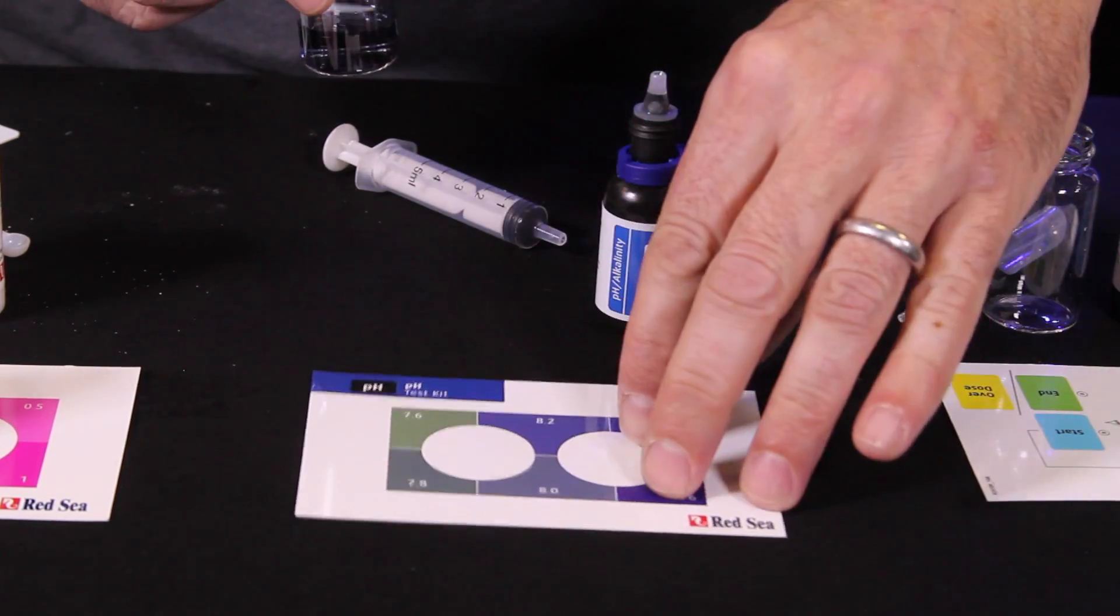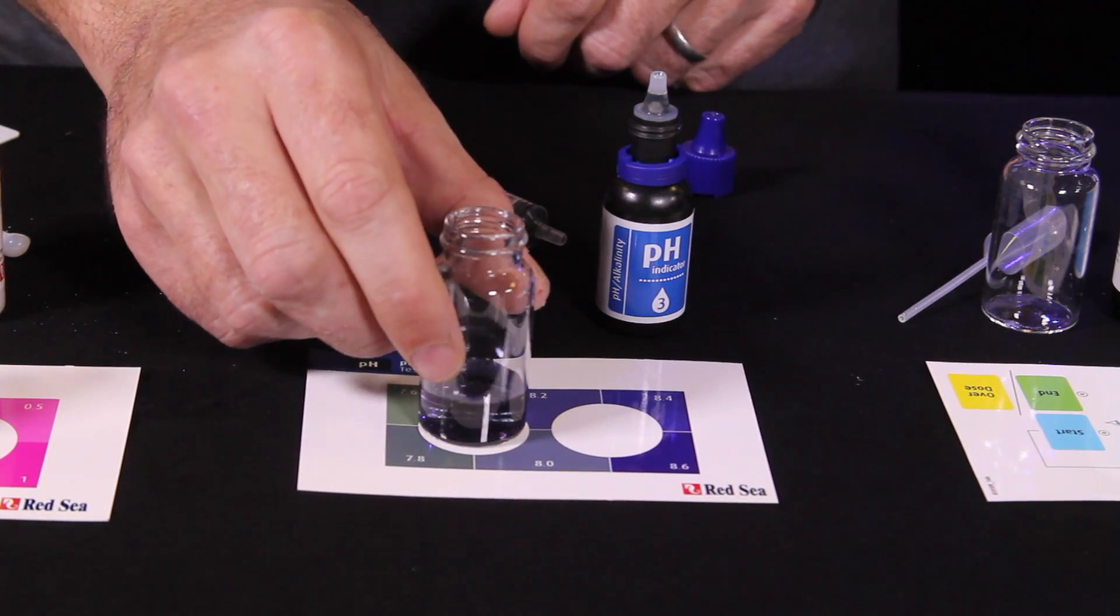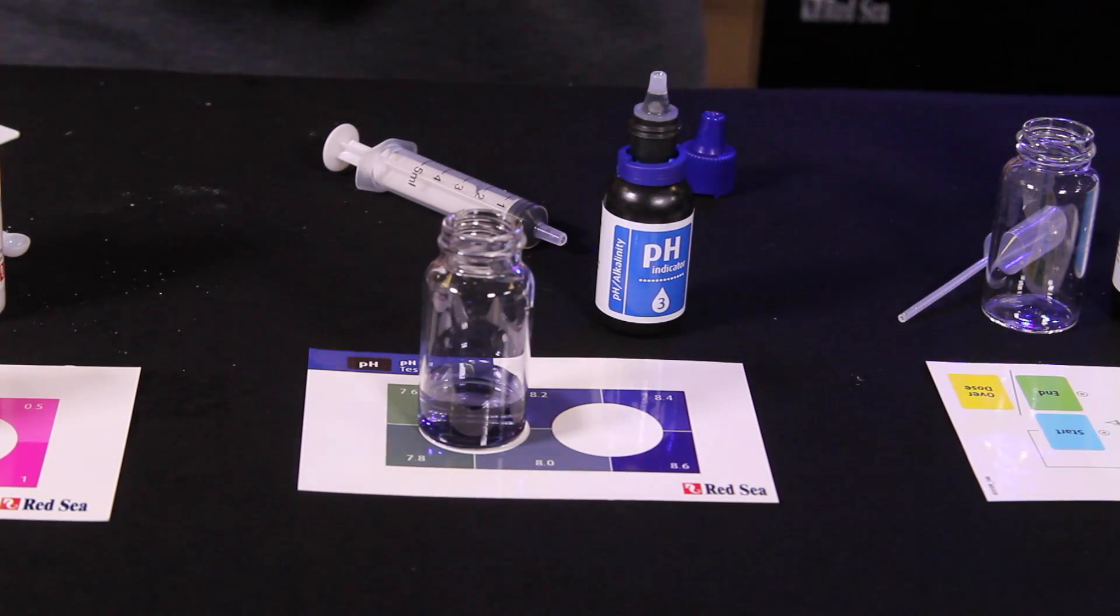And then we're going to flip our card over. We'll set our test vial on our color comparison chart and come back shortly to check our results.